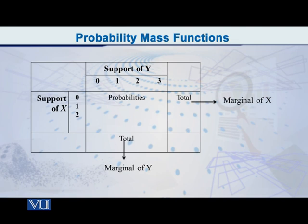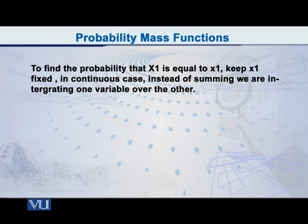It is not obvious then that it is appropriate to call them marginal probabilities. When this concept was extended to continuous variables, the same terminology was maintained. So even if the variables are continuous, instead of summing you are integrating over one particular variable, and you are getting the marginal PDF of the other one. This is the concept of marginal probability distribution.